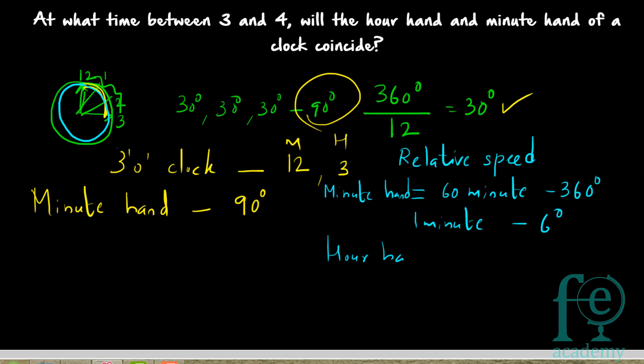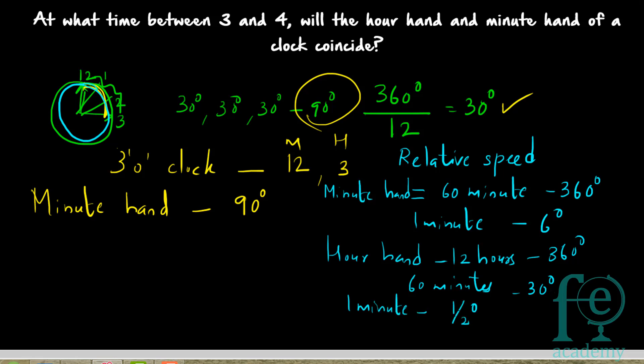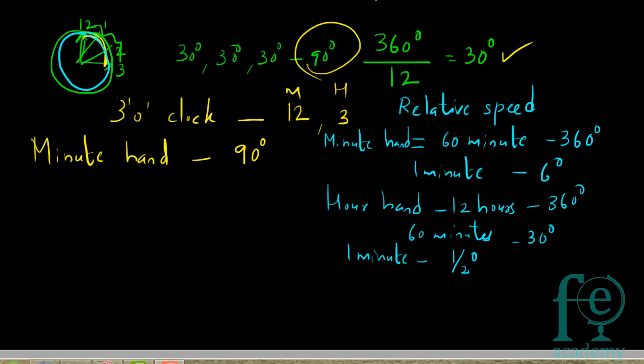The hour hand travels 360 degrees in 12 hours, or 30 degrees in 60 minutes. So in 1 minute, the hour hand will be travelling half a degree. Therefore, the relative speed between the minute hand and the hour hand is 6 degrees minus half a degree, which equals 5 and a half degrees per minute.